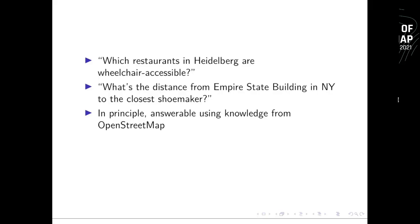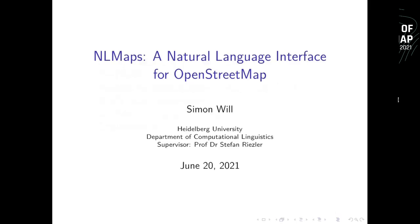Hello everyone and welcome to my talk at the State of the Map. I'm going to be concerned with questions like which restaurants in Heidelberg are wheelchair accessible, or what's the distance from the Empire State Building in New York to the closest shoemaker. In principle, they are answerable using knowledge on OpenStreetMap. I'm going to present NLMAPS, a natural language interface for OpenStreetMap.